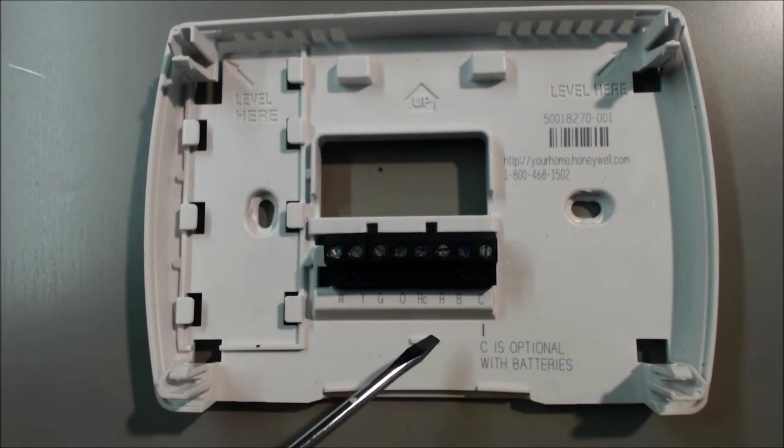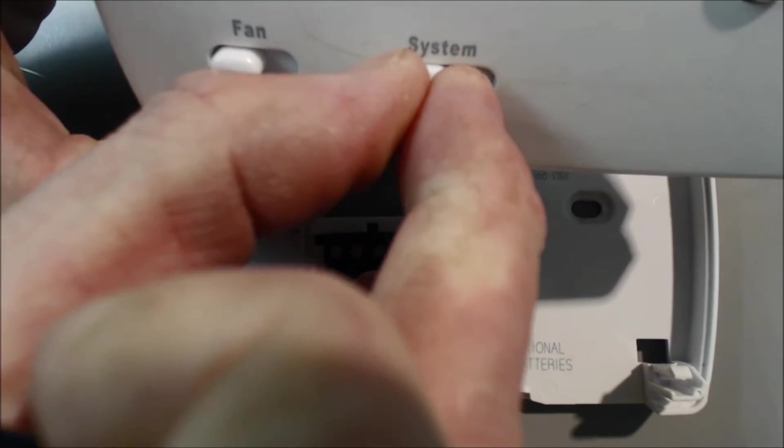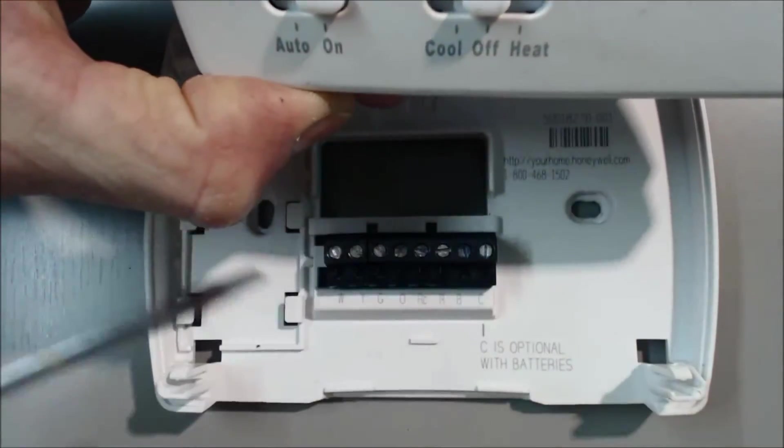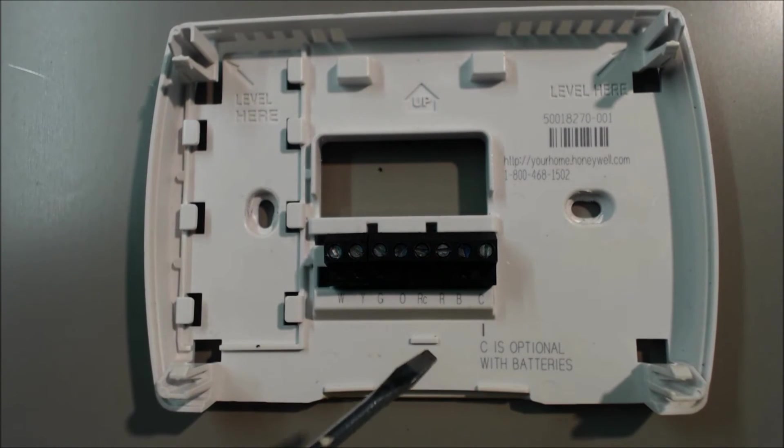If you wanted to turn the fan on on the air handler, you could turn this back to off. Make sure to turn that to the on and it'll circulate the air at its lowest fan speed, which is normally selected in the air handler.